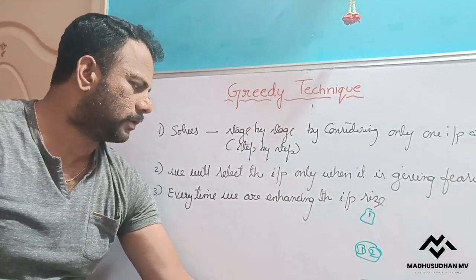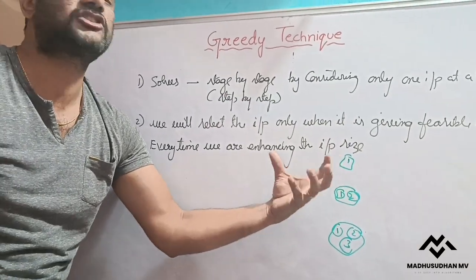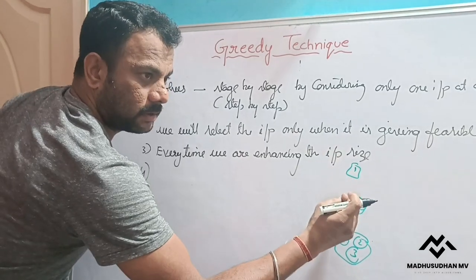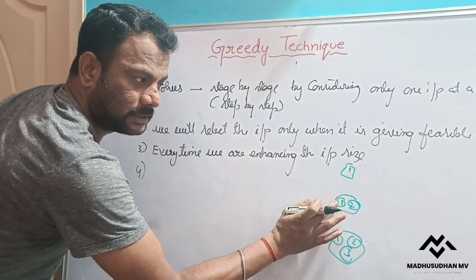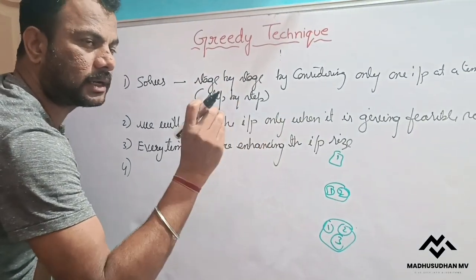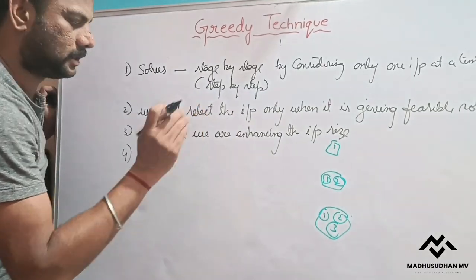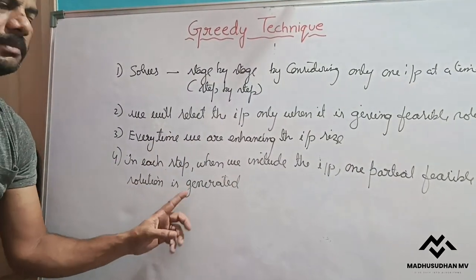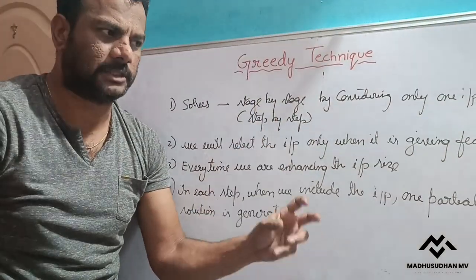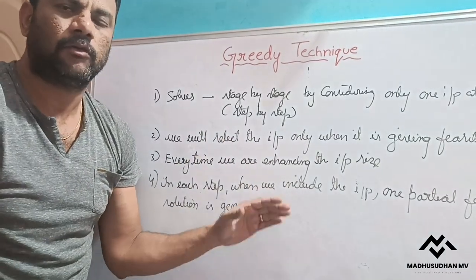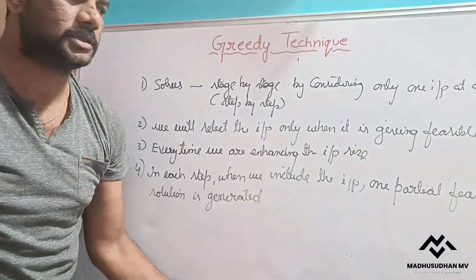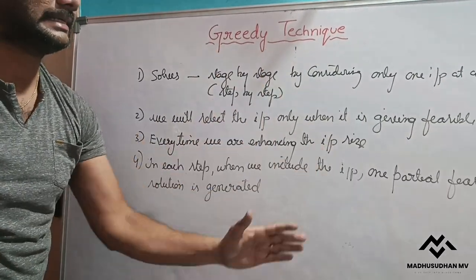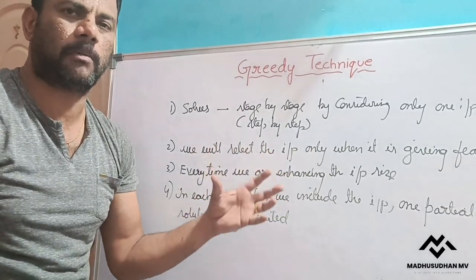Every time we are extending and increasing the input size. Whenever we include one input we are constructing a partial feasible solution. So every time we include an input we generate one partial feasible solution. Like this we construct all possible feasible solutions, and out of all possible feasible solutions we select the one that is the optimal solution.